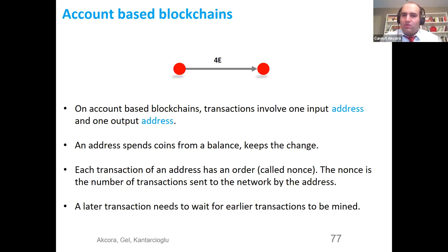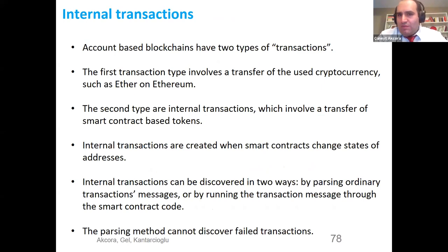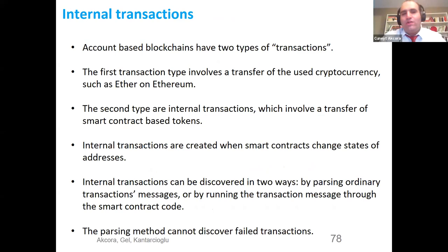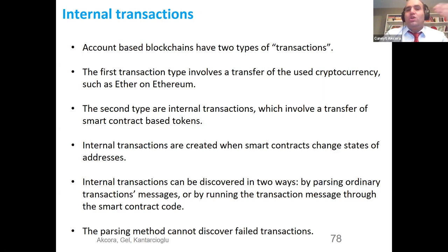Each transaction of an address has an order stored in an integer called a nonce — the number of transactions sent to the network. An address cannot create a third transaction before the first and second are included in previous blocks. Account-based blockchains have two types of transactions: the first is ordinary transfer of cryptocurrency such as Ether, exactly like Bitcoin transactions. The second type are internal transactions, which involve transfer of smart contract based tokens and are based on state changes of smart contracts. Smart contracts store variables in key-value stores; whenever a value changes, there is an internal transaction.